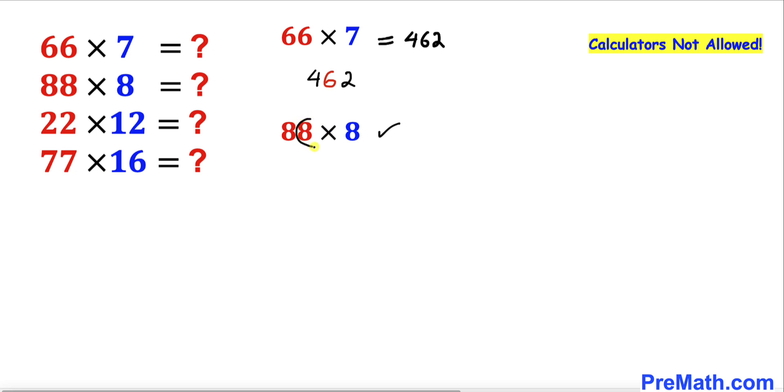Once again we are going to multiply only these two digits 8 times 8 is going to give us 64 and now let's add these two numbers 4 plus 6 is 10.